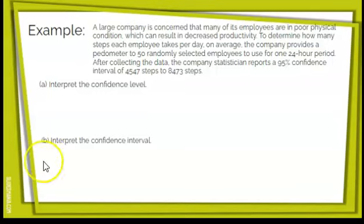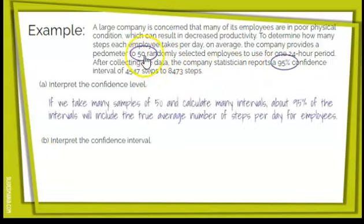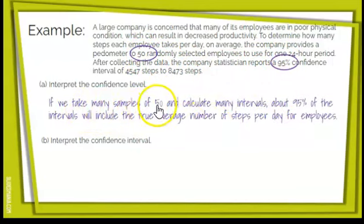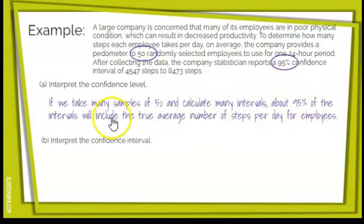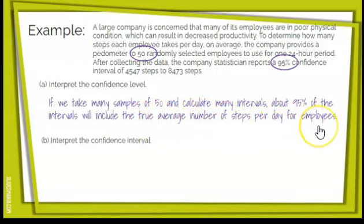Level is what we just talked about. When you look at level, you look at your sample size and your confidence level. Incorporating those into the sentence: 'If we take many samples of size 50 and calculate many intervals, about 95% of the intervals will include the true average number of steps per day for employees.'